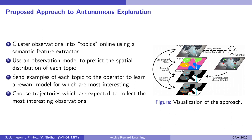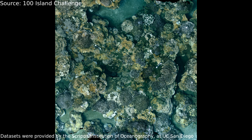To overcome this challenge, we have the robot group similar images together by learning a few representative topics that describe them. It is easier to model the distribution and reward of these topics than it is to do so for images.